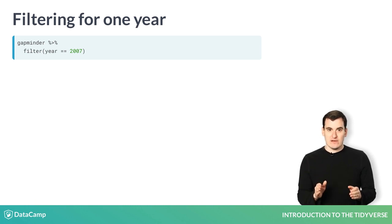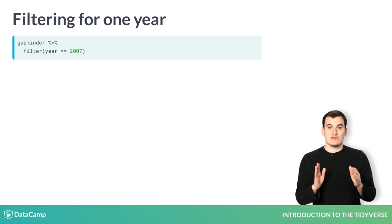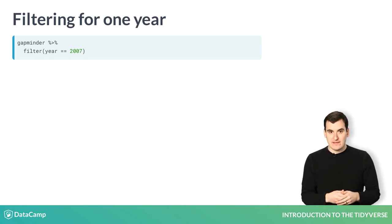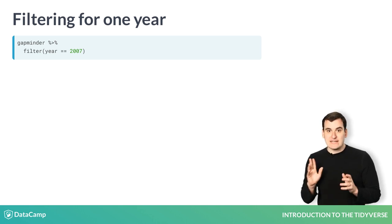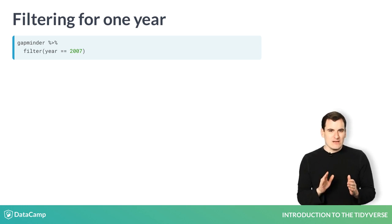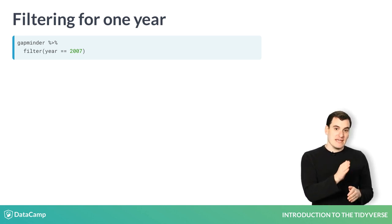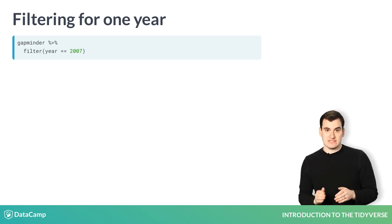After the pipe, we can perform our first verb. We have data on many years, but we'd like to filter for just one. Let's say we filter for 2007, the most recent data in the data set. The condition year == 2007 is what we use to filter observations. The equals equals may be surprising — it's what we call a logical equals, an operation to compare two values, each year and the number 2007.